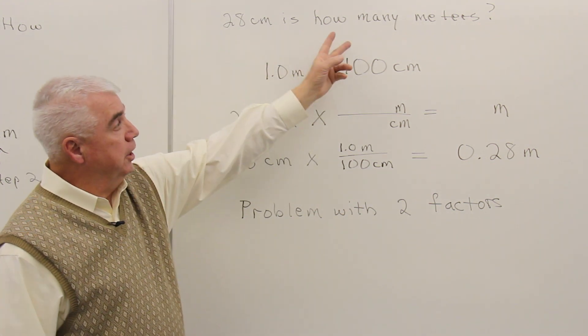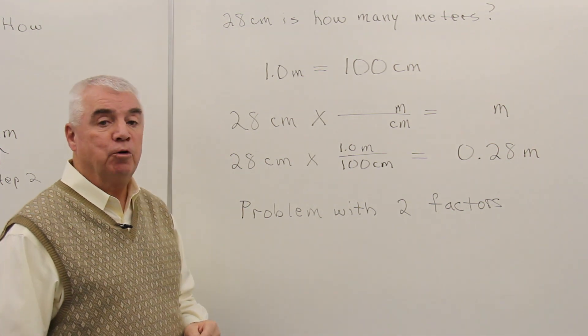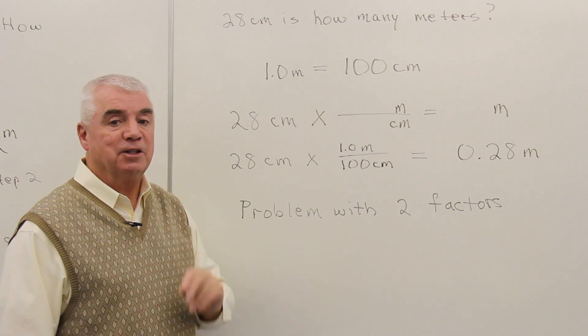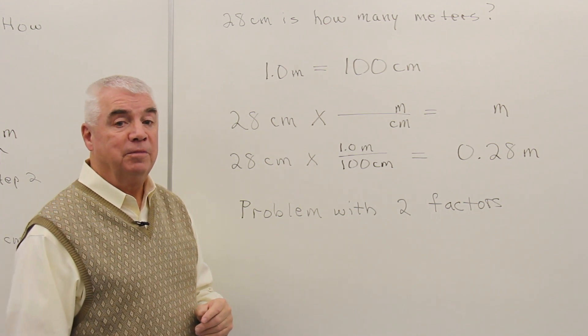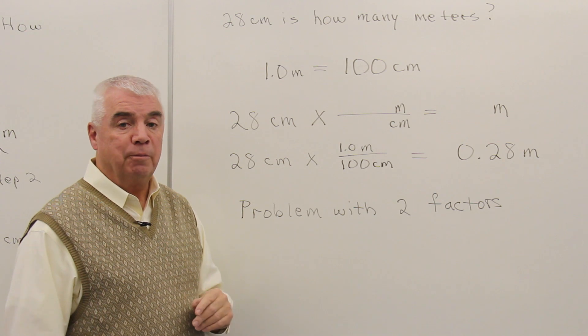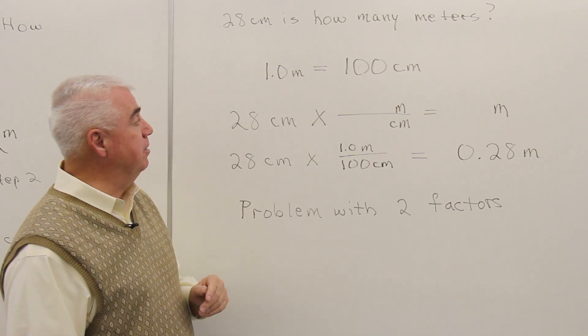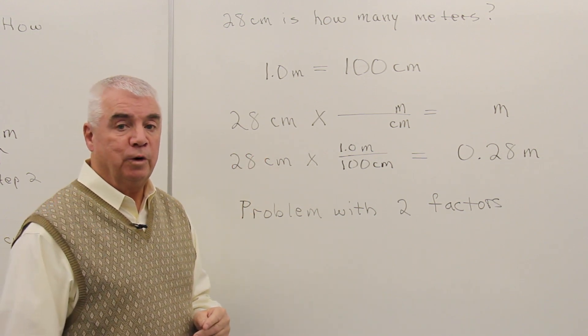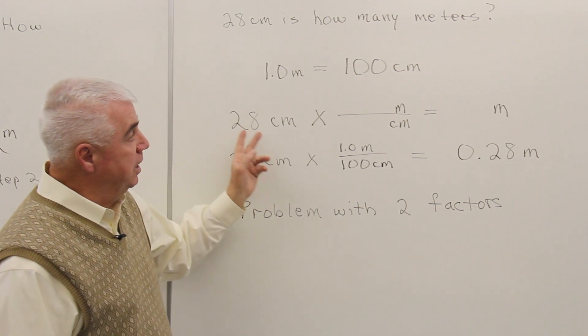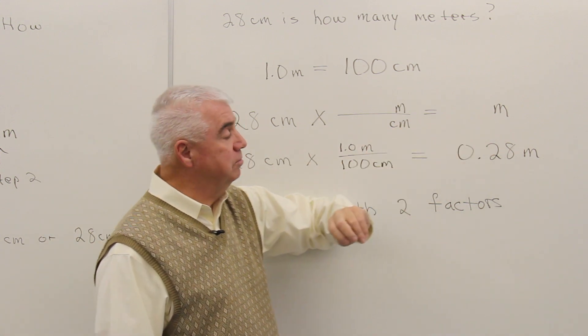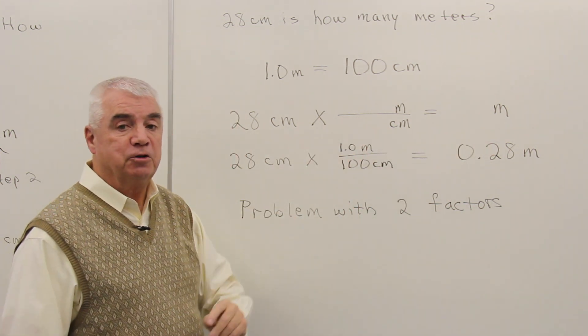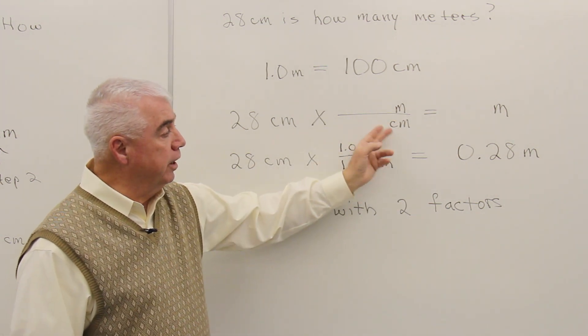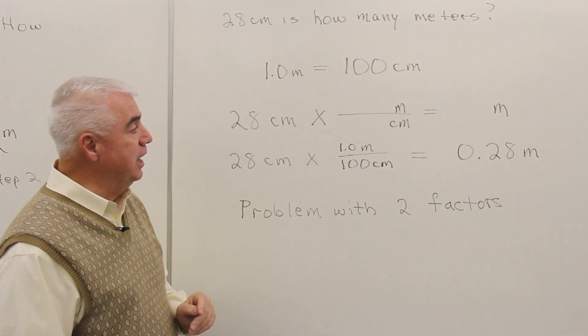And again, up here, if I were to encounter this as a quiz or an exam question, I see a number. I'd say, hey, it's most likely a math problem. Do I have a formula for it? No. I'm going to use the factor unit method. Step one, simply write down the number that's given and the unit that goes with it. Step two, we'd like to know meters. Step three, here's our factor, unit of the answer in the numerator, unit that we're given in the denominator so that centimeters cancel.